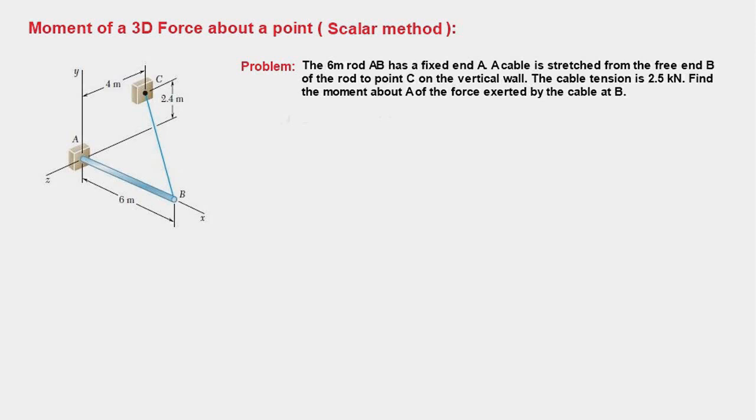Instead, we are going to rely on our ability to visualize the three-dimensional aspects and determine moment of the force components about the coordinate axis. Since there are no sketches involved, we can call this method purely a scalar method of finding moment. Let's get started. We have to find moment of a force acting at point B due to the cable tension, and the moment is required to be found about point A.